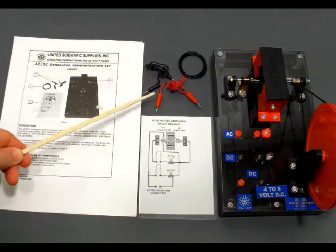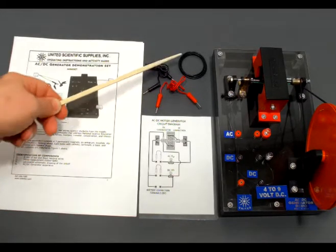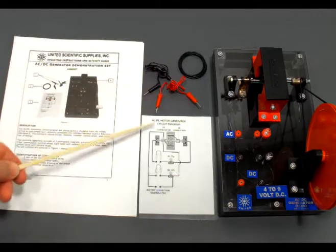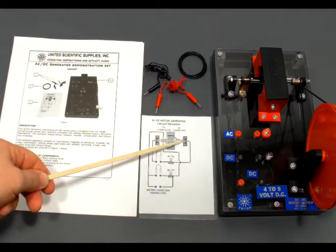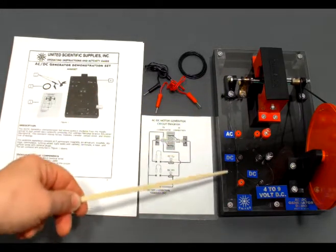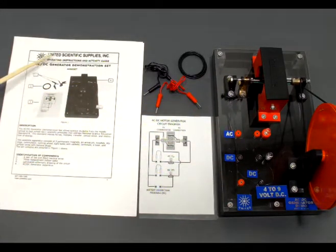The kit comes with a pair of banana plug wires, a spare drive belt, a circuit diagram for the DC and AC side of the generator, the generator unit itself, and an activity guide that comes with three guided activities.